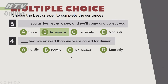Câu số 4: '___ had we arrived than we were called for dinner.' Chúng tôi vừa mới đến nơi thì họ gọi đi ăn tối. Chúng ta thấy sự xuất hiện của chữ 'than'. 'Than' không đi với 'hardly', 'barely', 'scarcely' mà đi với 'no sooner'. Đáp án C: 'No sooner had we arrived than we were called for dinner.'